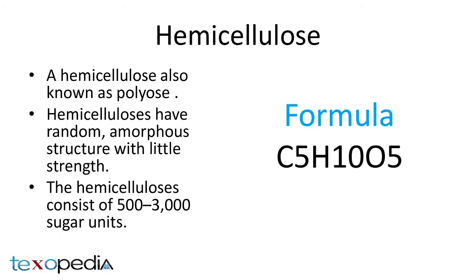Next, what is hemicellulose? Hemicellulose, also known as polyose, is one of a number of heteropolymer matrix polysaccharides, such as arabinoxylan, present along with cellulose in almost all terrestrial plant cell walls. While cellulose is crystalline, strong and resistant to hydrolysis, hemicellulose has a random amorphous structure with little strength. Hemicellulose consists of 500 to 3,000 sugar units.